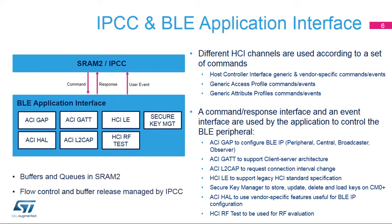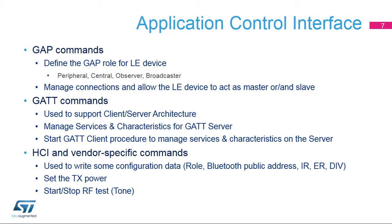Different sets of commands, responses, and events are used depending on the final application. A set of commands supports Generic Access Profiles, or GAP, to define the BLE link role. Another set of commands is used for the Generic Attributes Profiles, or GATT, to support the transfer of values via the client-server architecture.